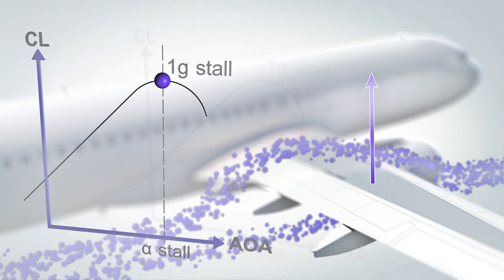The increase of the load factor caused by the increase of the angle of attack also occurs when a climb is initiated or when leveling off. Therefore, in these situations, V-alpha prot and V-alpha max will increase as a result of the increase of the current angle of attack.